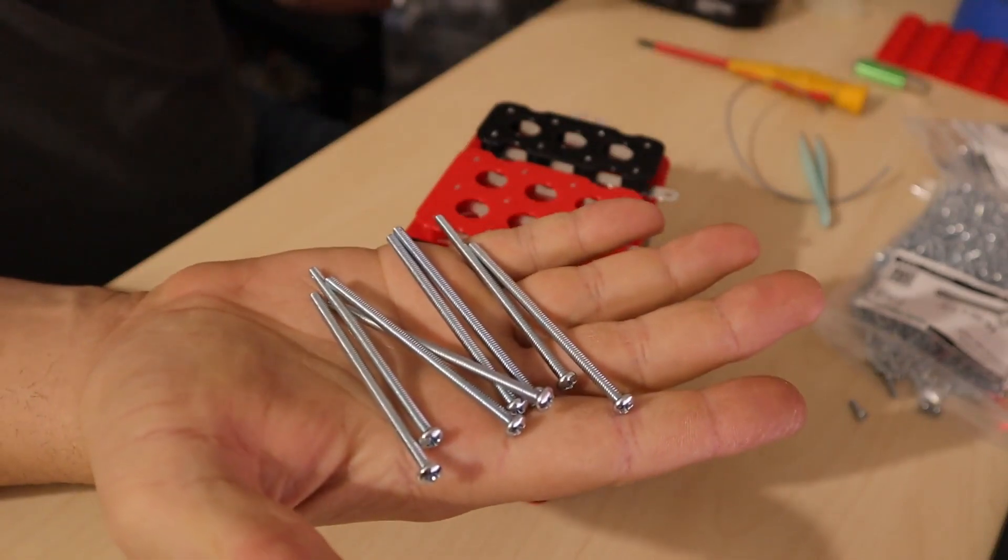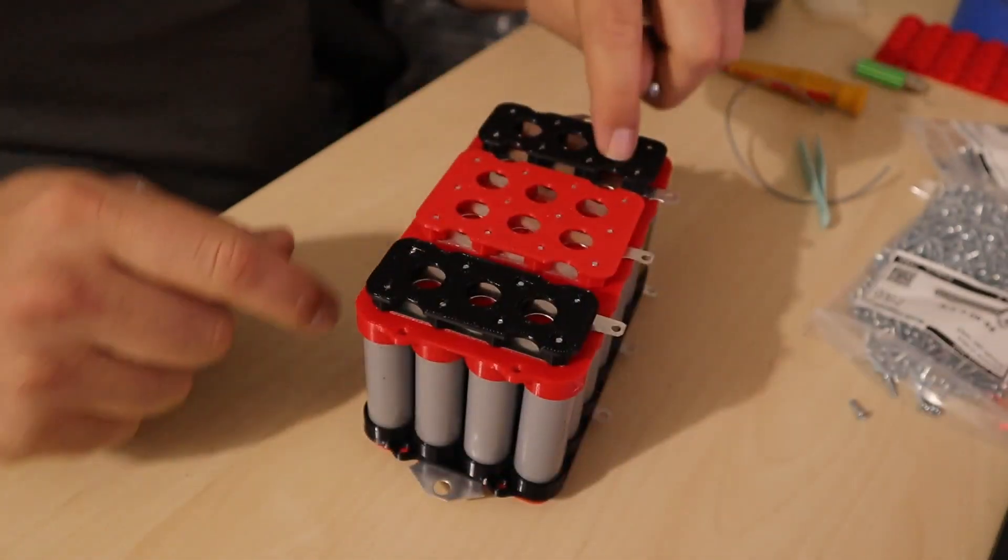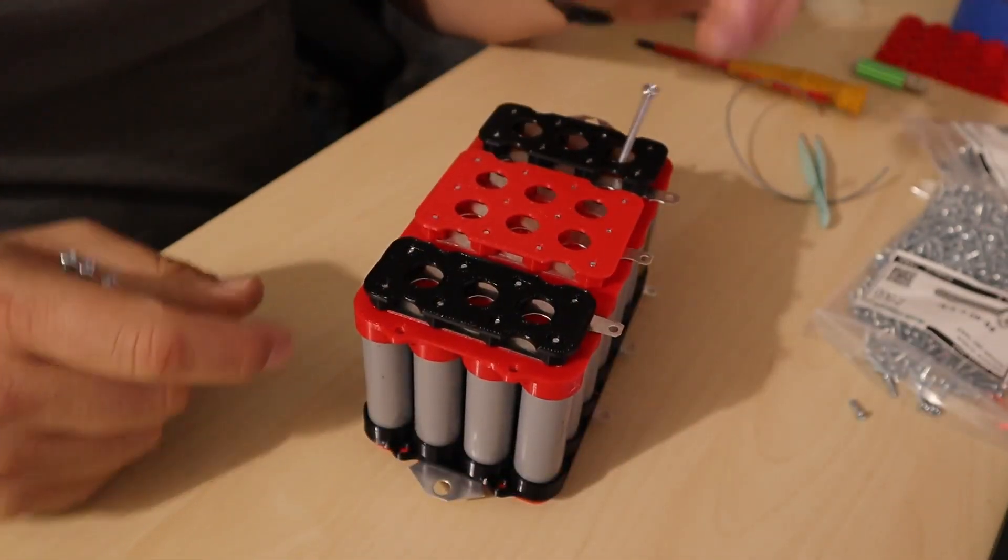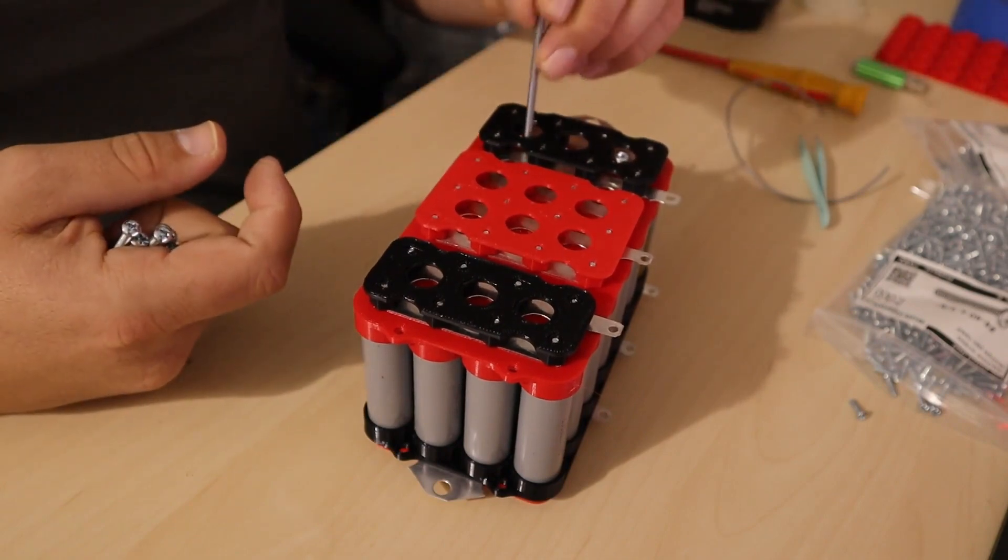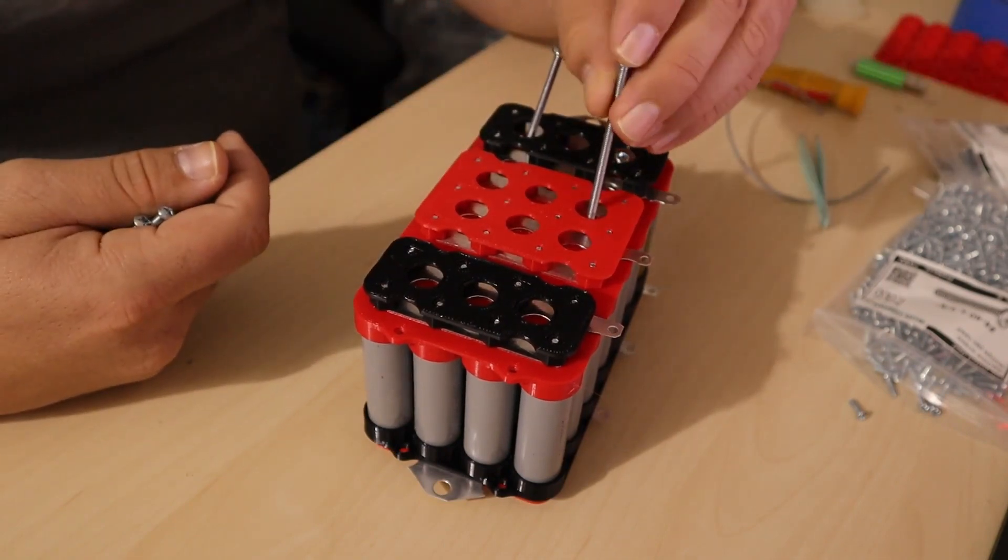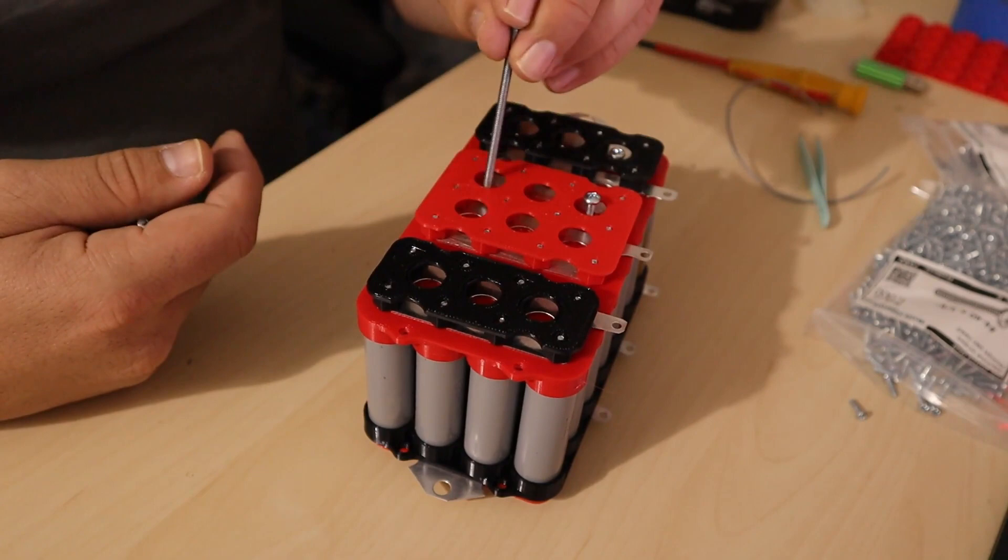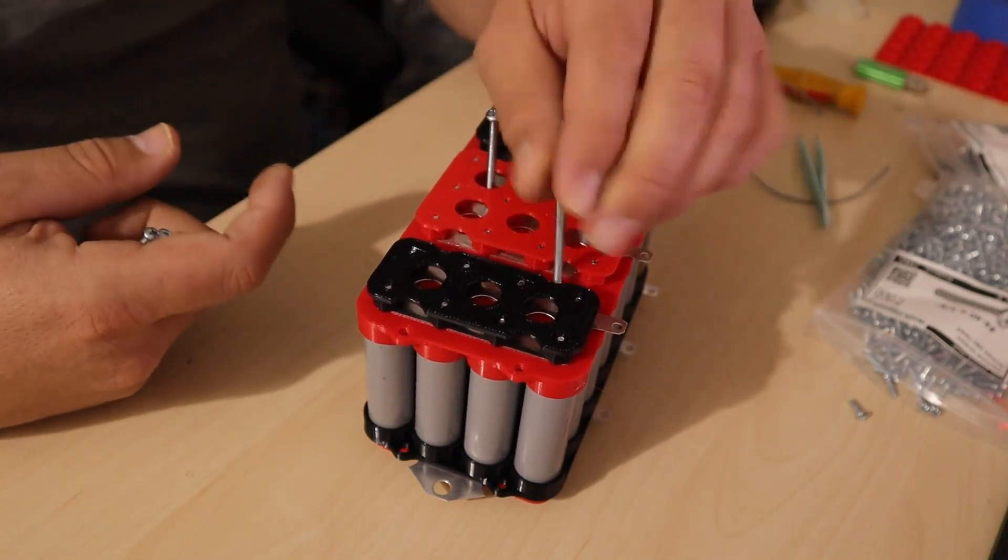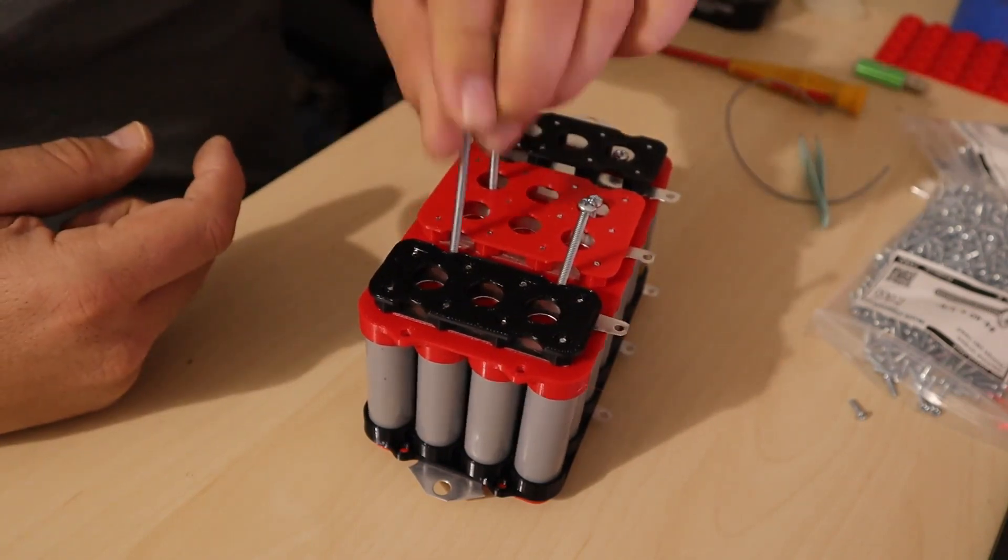Every single battery kit comes with long screws to do the final adjustment. What I do is place them in the little holes that are on top of the spacers. I put all of them at once and make sure that I do the tightening easier later.